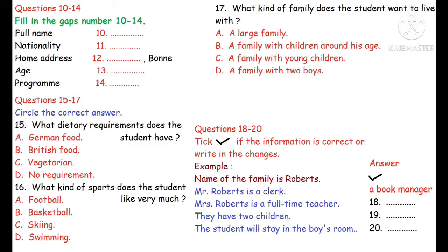Actually, I interviewed a family yesterday who seemed just right for you. Their name is Roberts — the Roberts family. Mr. Roberts is a bank manager. My father is a bank manager too! His wife is a part-time nursery school teacher who works in the morning. They have two children: the girl is eighteen but she's just gone away to college, which is why they have a room vacant. You'd stay in her room. Their son is sixteen and likes football very much. I'd like to meet this family. I'll give Mrs. Roberts a ring now — she should be home at this time.